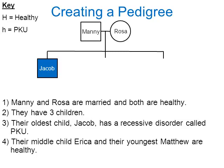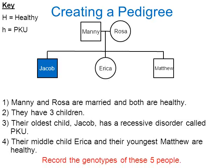Their middle child Erica and youngest child Matthew are both healthy. Erica is represented by a circle, Matthew by a square, with the youngest on the right. Let's figure out the genotypes: Jacob has to be homozygous recessive — two lowercase h's — because that's the only way to have PKU. The other four people are healthy, and there are two possible genotypes that lead to healthy, so we need to figure out which one they are.